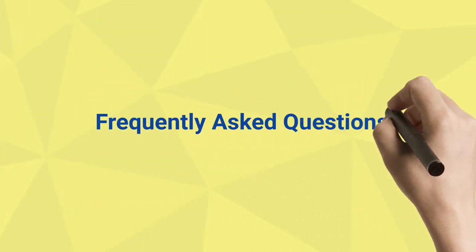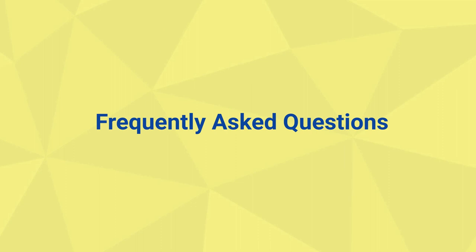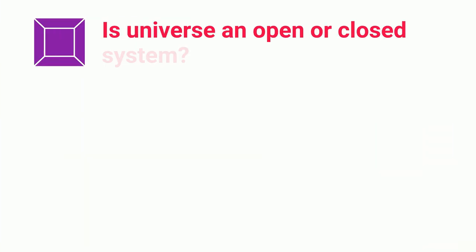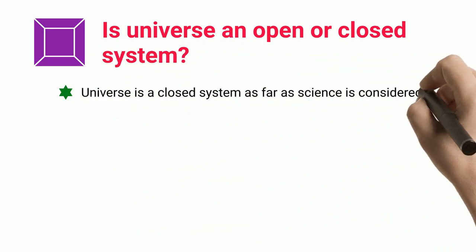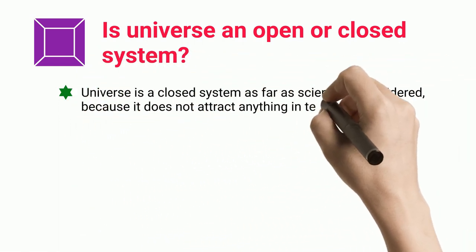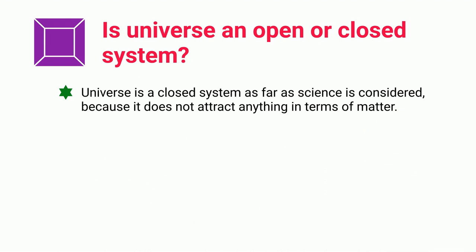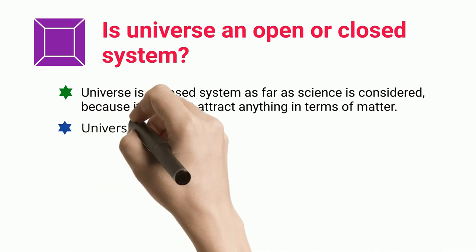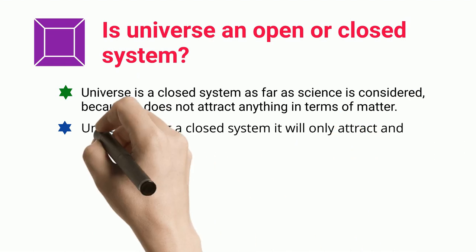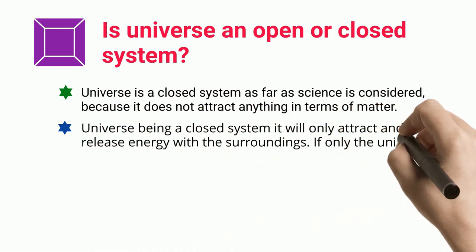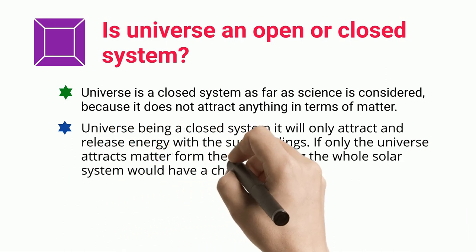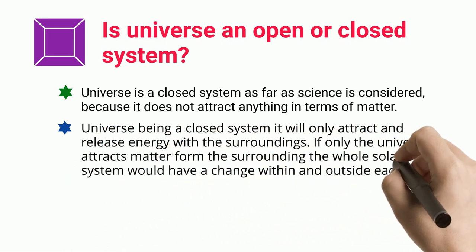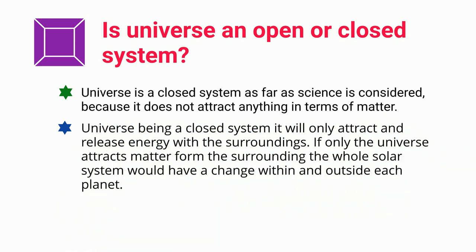Frequently Asked Questions. Is the universe an open or closed system? The universe is a closed system as far as science is concerned, because it does not attract anything in terms of matter. Being a closed system, the universe will only attract and release energy with the surroundings. If the universe attracted matter from the surrounding, the whole solar system would have a change within and outside each planet.